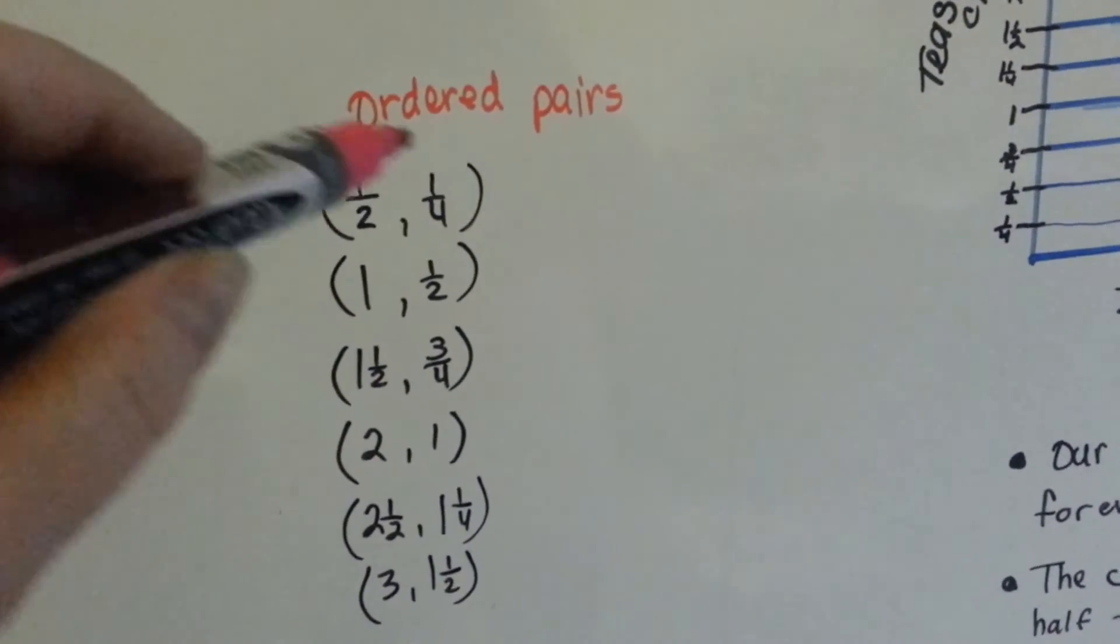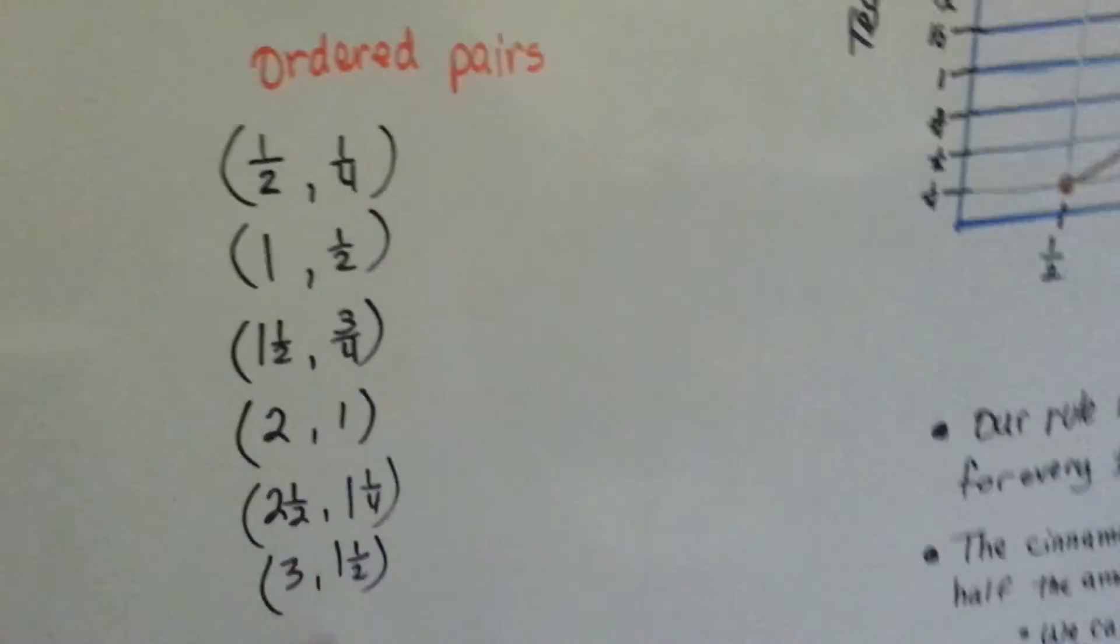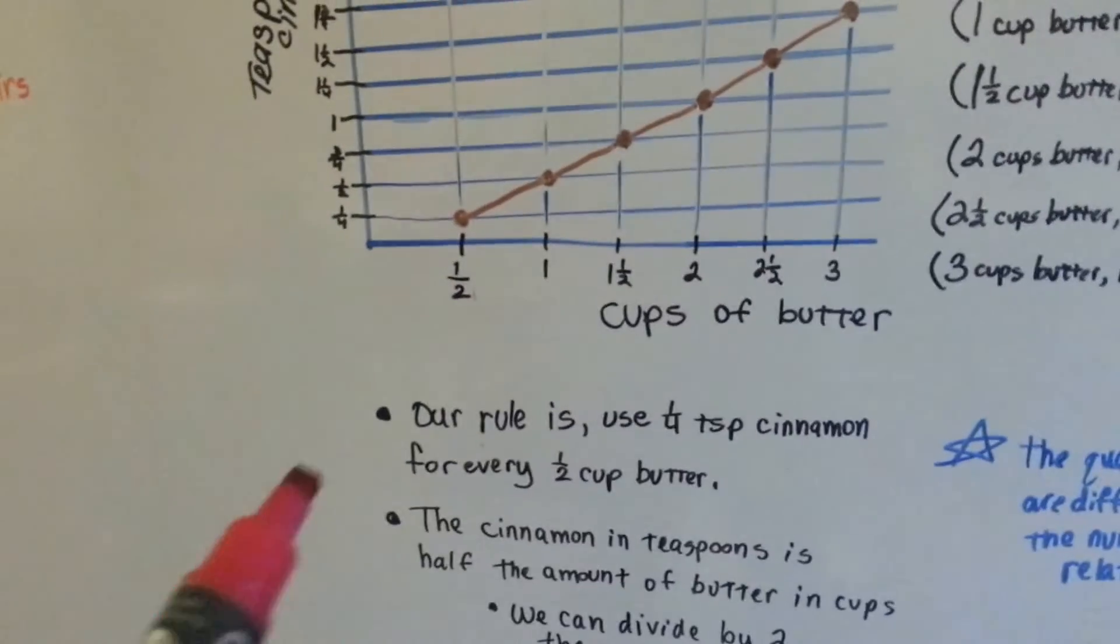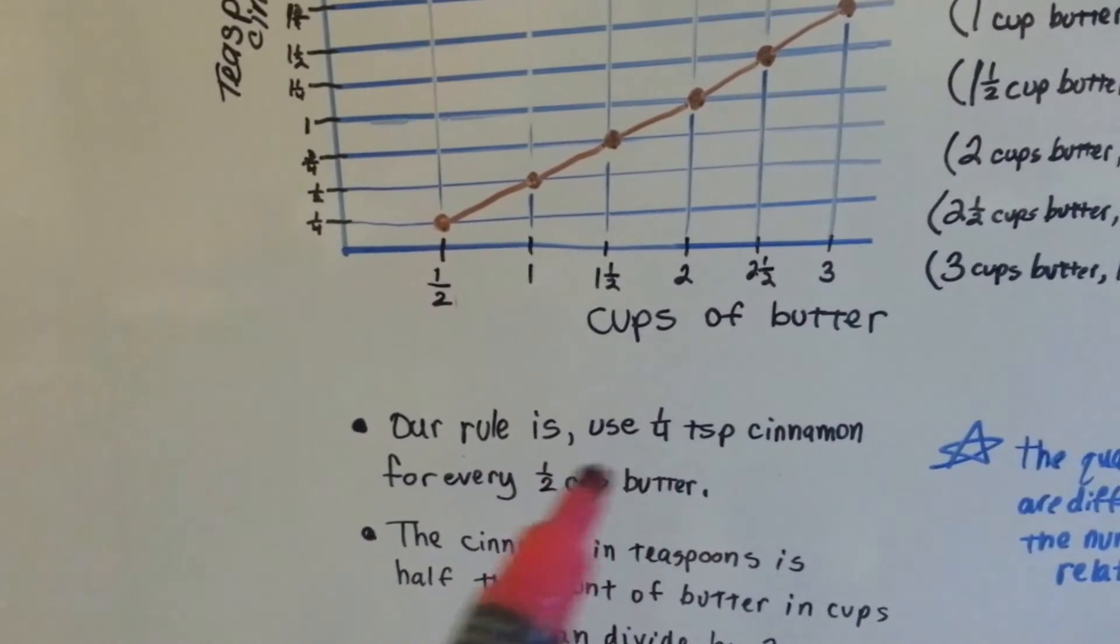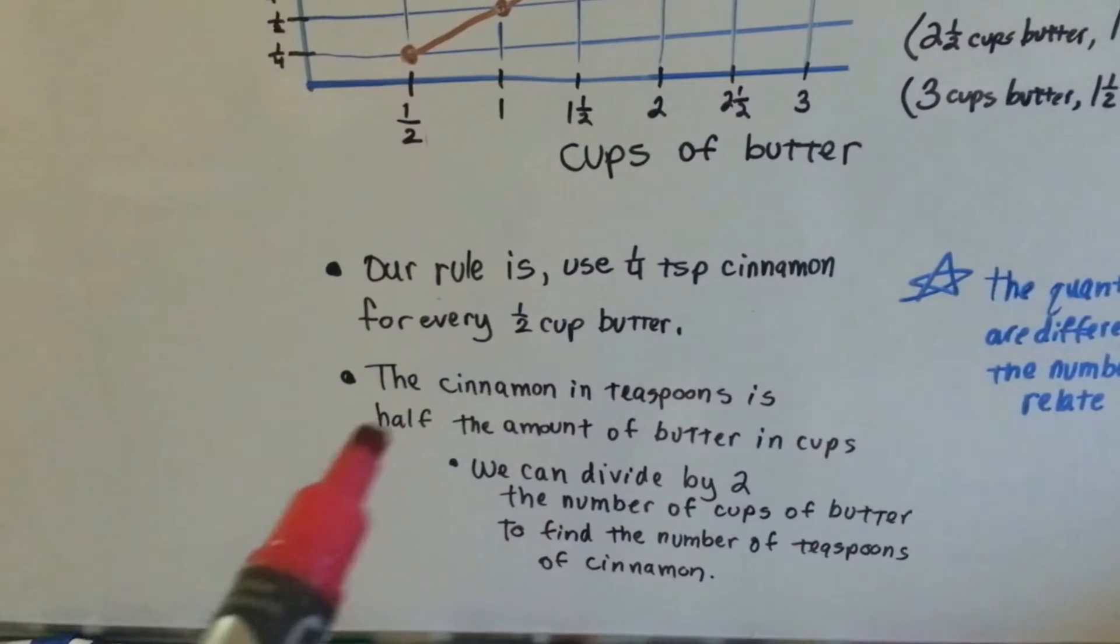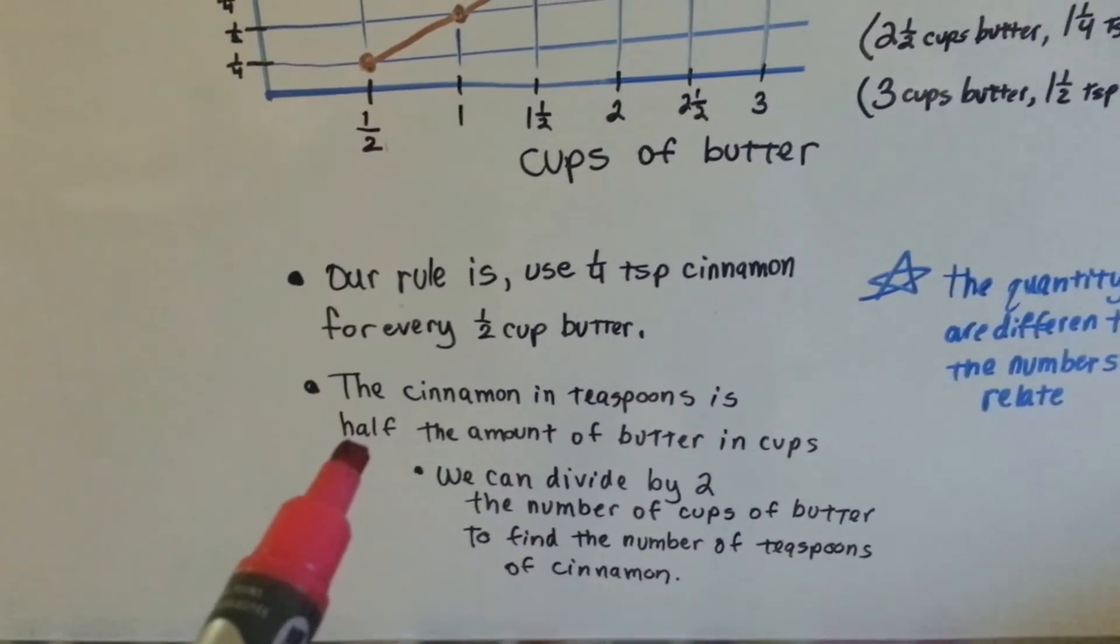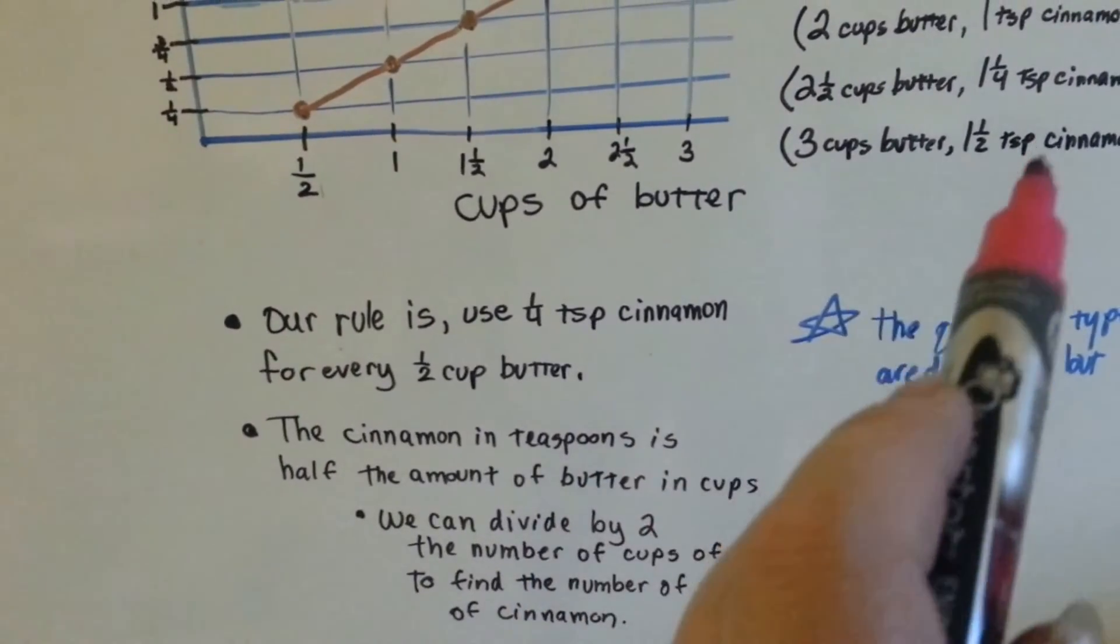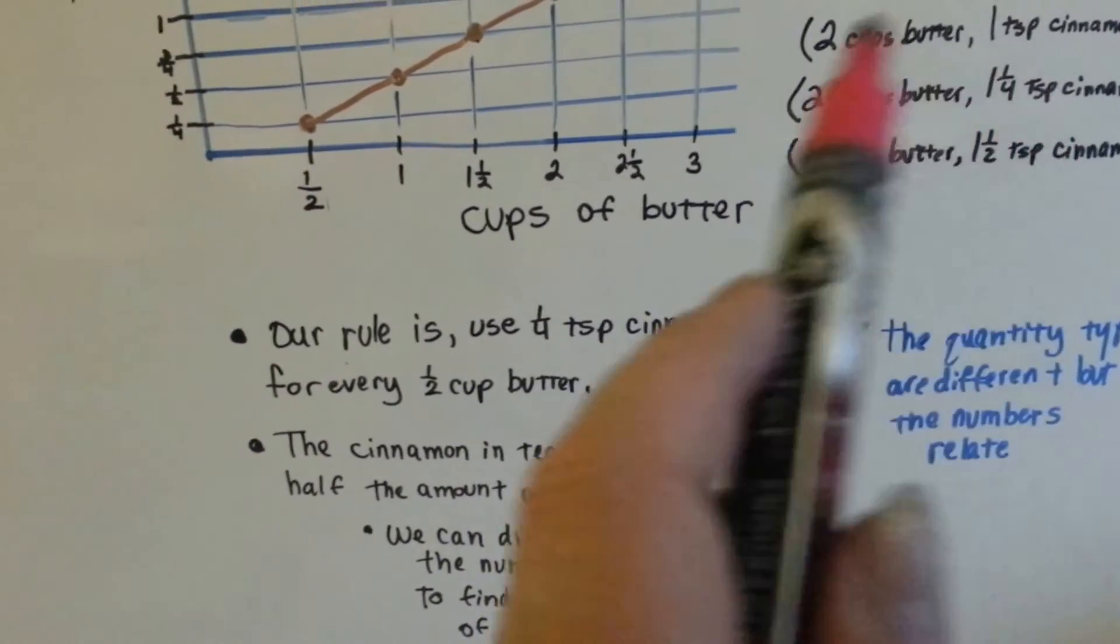We can see the relationship of the two numbers. Our rule is: use one-fourth teaspoon of cinnamon for every half cup of butter. The cinnamon in teaspoons is half the amount of butter in cups. Remember, even though it's cups versus teaspoons, the numbers still double.